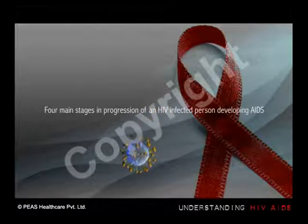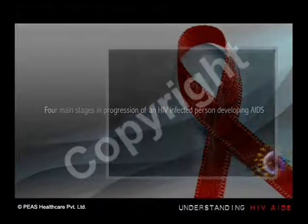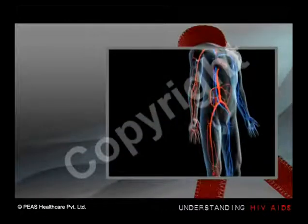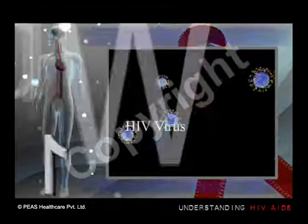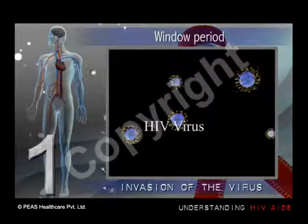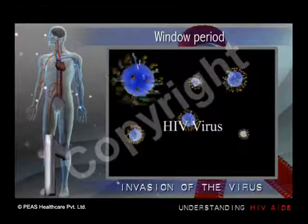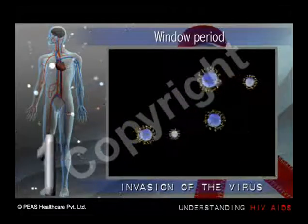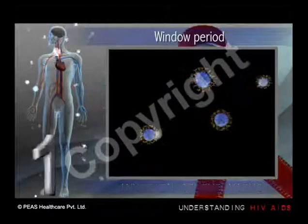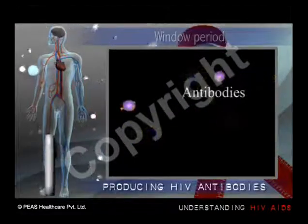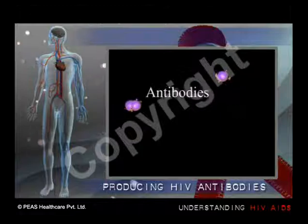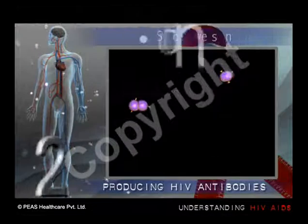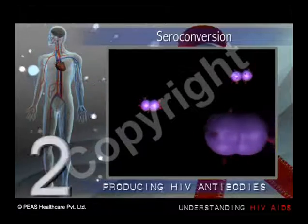The period following the initial HIV infection is called the window period. It is called this because this period reflects the window of time between infection with the virus and when HIV antibodies develop in the bloodstream. Next comes a period of seroconversion.